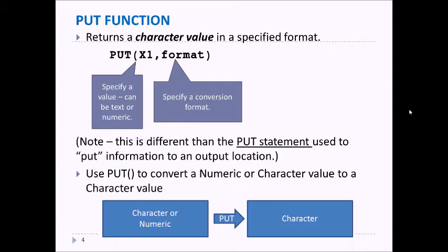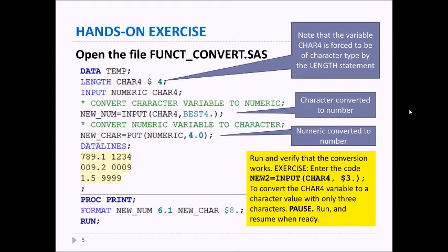Let's look at this hands-on exercise. Open the file FUNCT_CONVERT.SAS and you'll see this code. First of all, notice that the length statement is used to force the CHAR4 variable to a character type. We read the data below which contains two values that we're naming NUMERIC and CHAR4.